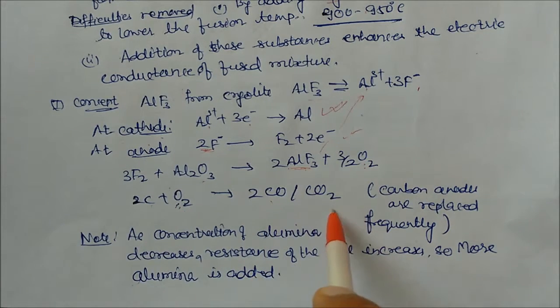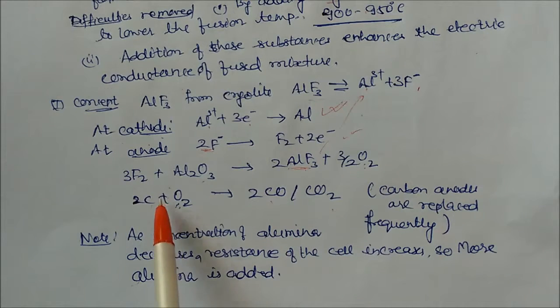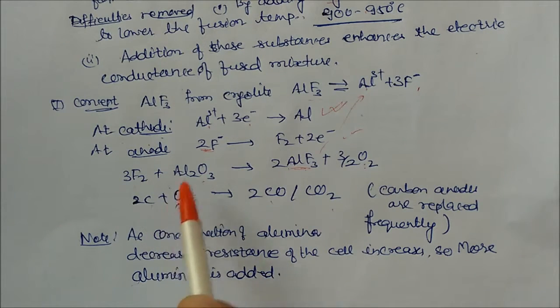And AlF3 is again reused like this, and oxygen is released. This oxygen will react with the carbon, so they form carbon monoxide and carbon dioxide. Again the carbon may react with the alumina to form aluminium carbide also. So when this carbon is being attacked by the oxygen, carbon anodes are replaced frequently.